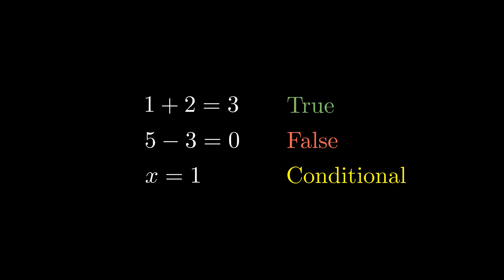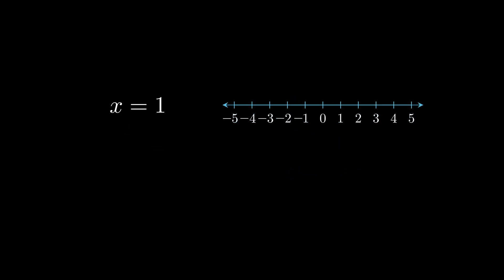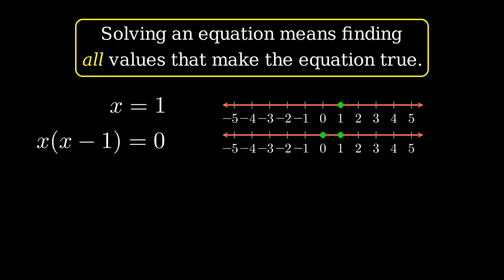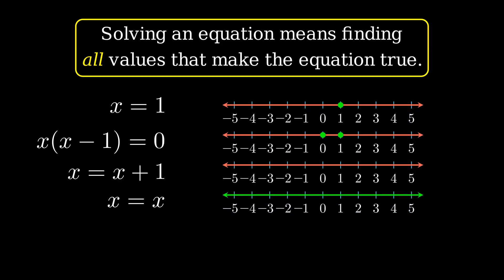Here is one particular visualization we can use for this idea. Here is a real number line. I'll mark values that make the equation true in green, and all other values that make it false in red. When we solve an equation for x, what that means is we are finding all values of x that make the equation true. In many cases, this consists of a single point or value. But there are also plenty of cases where we have more than one solution, no solution, or even all real solutions. The point is, we have to find all of them.